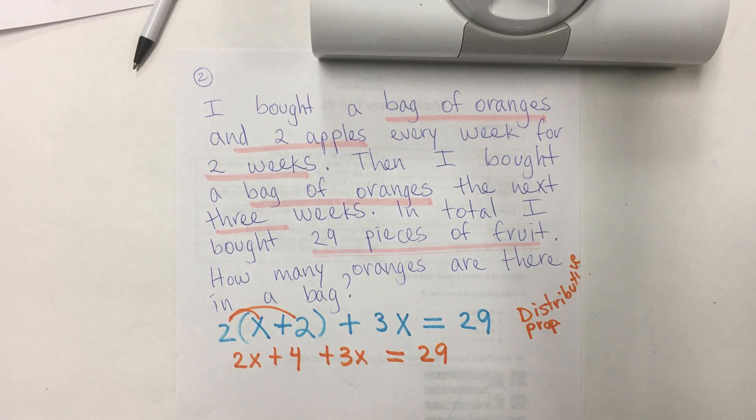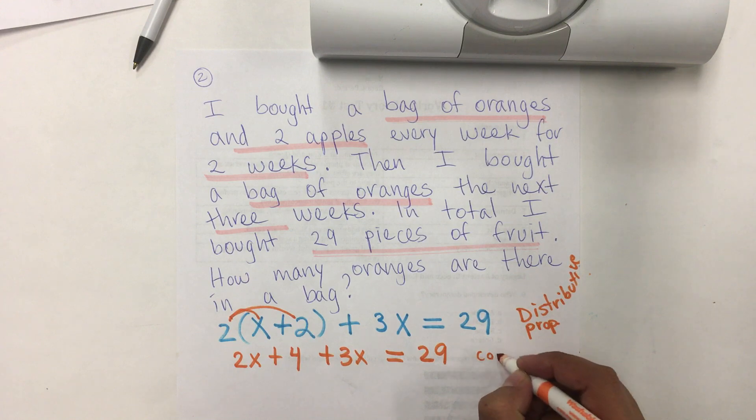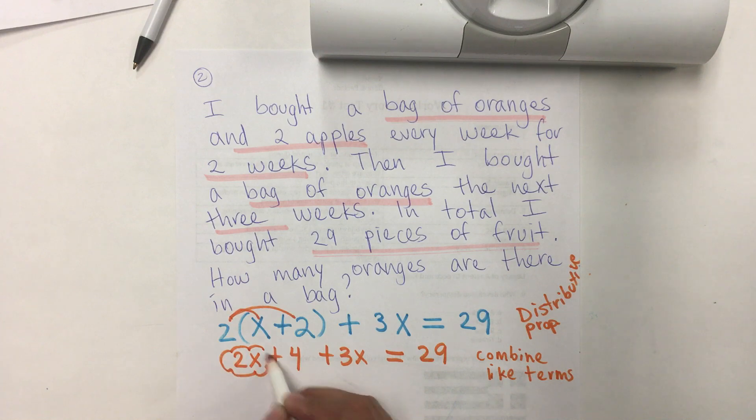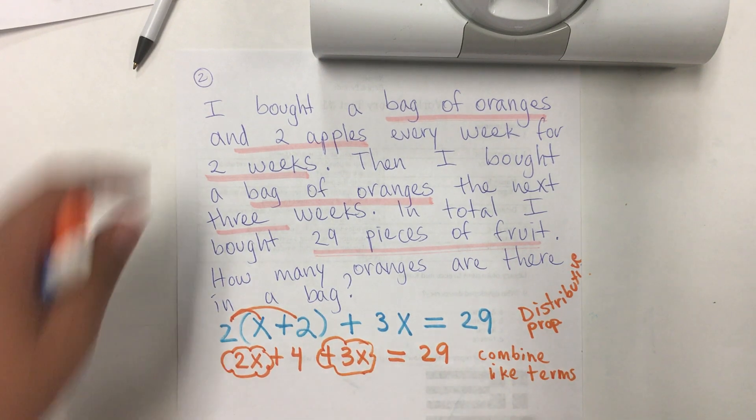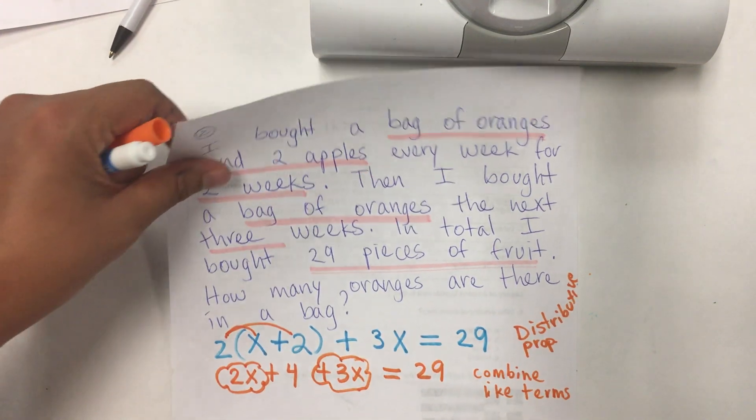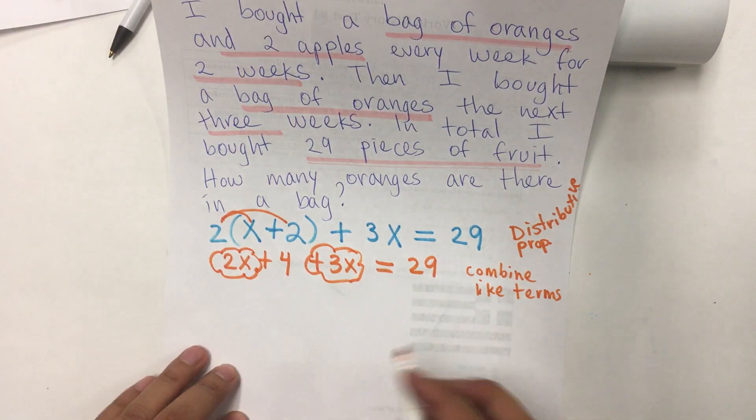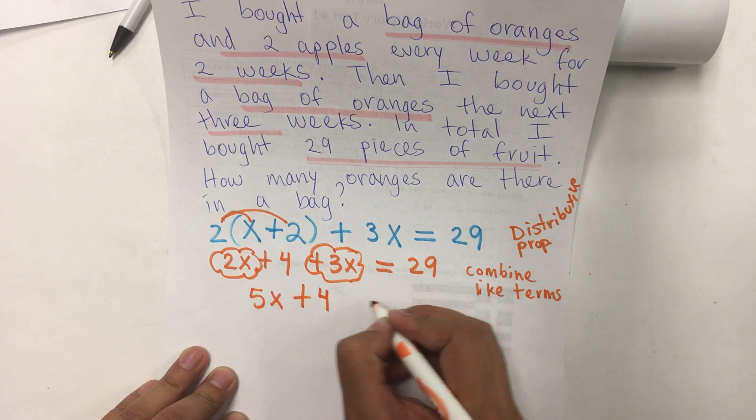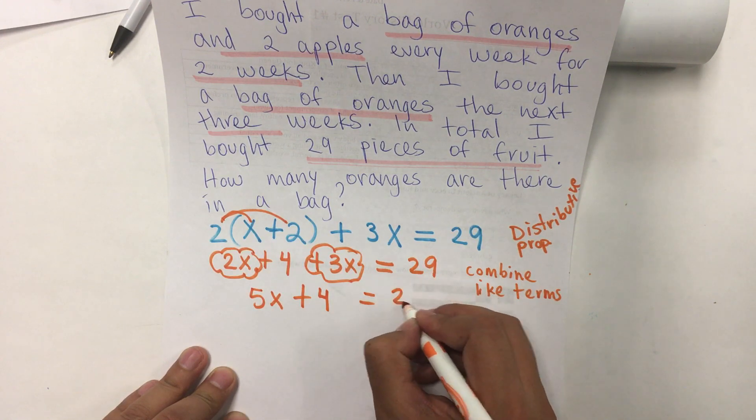So, I'm going to combine like terms, meaning the ones with the variables go together. And, constants with constants. Only if they're on the same side. So, I have here 2x and 3x. And, that gives me 5x plus 4 equals 29.